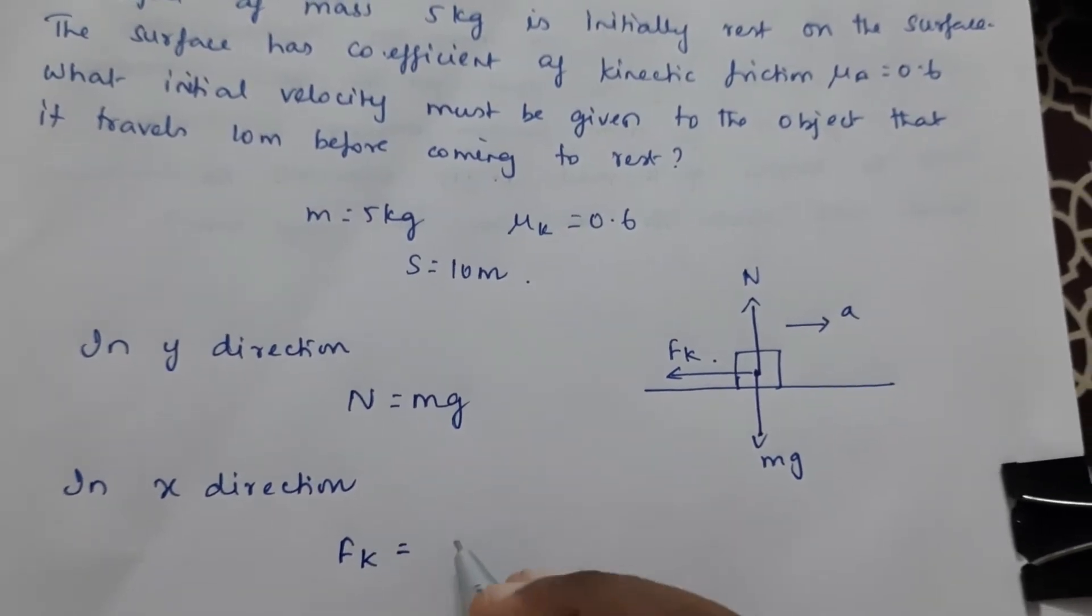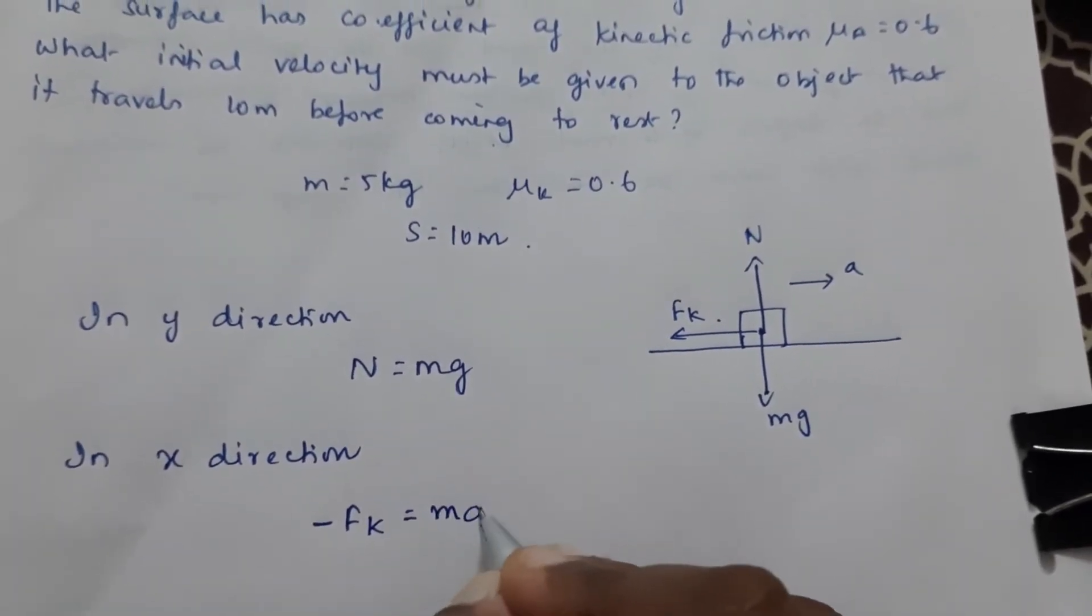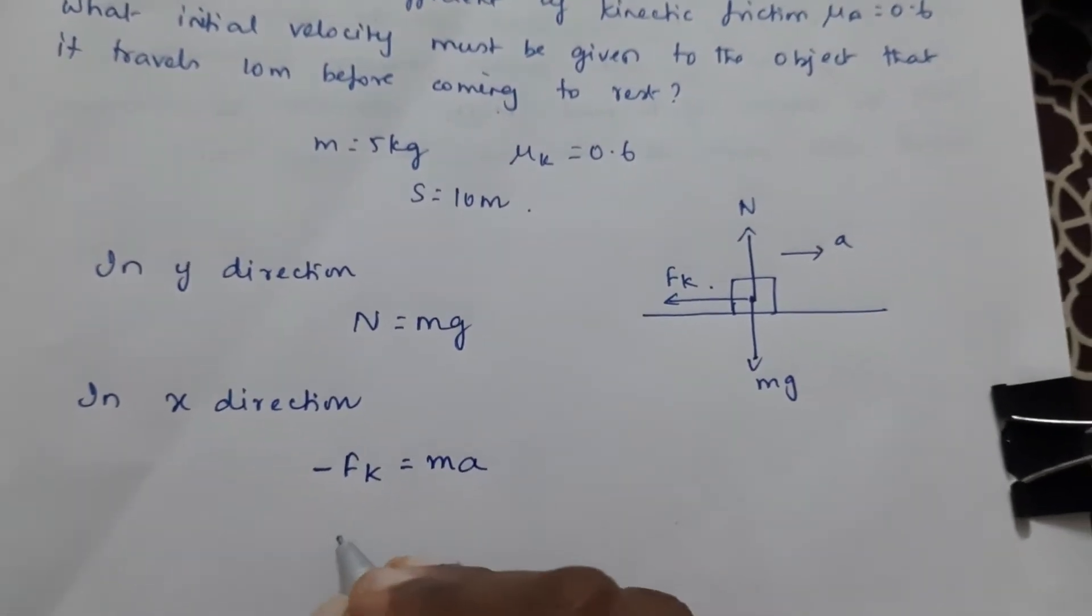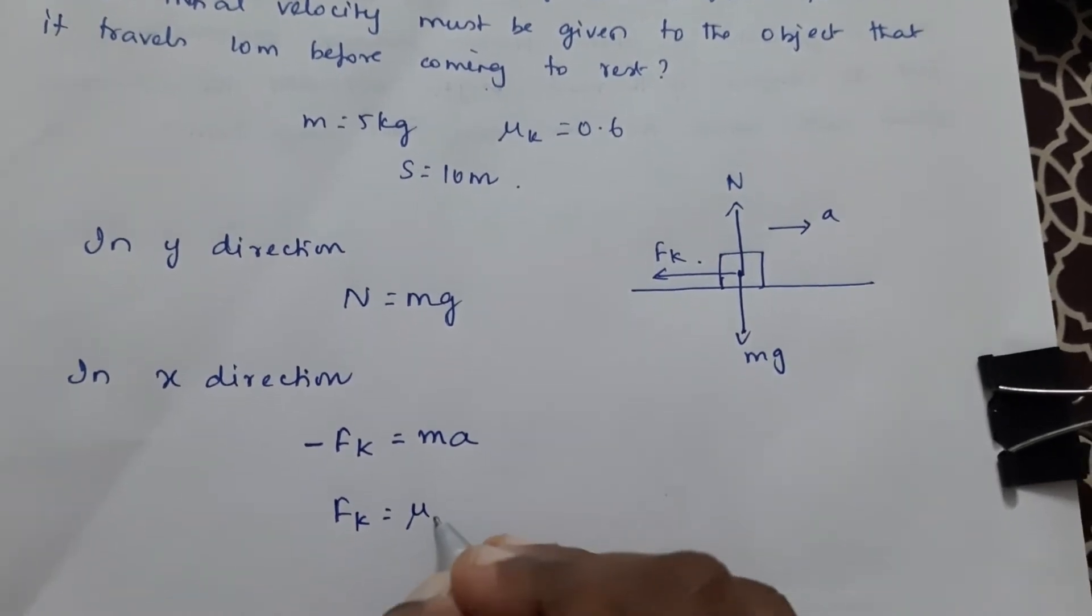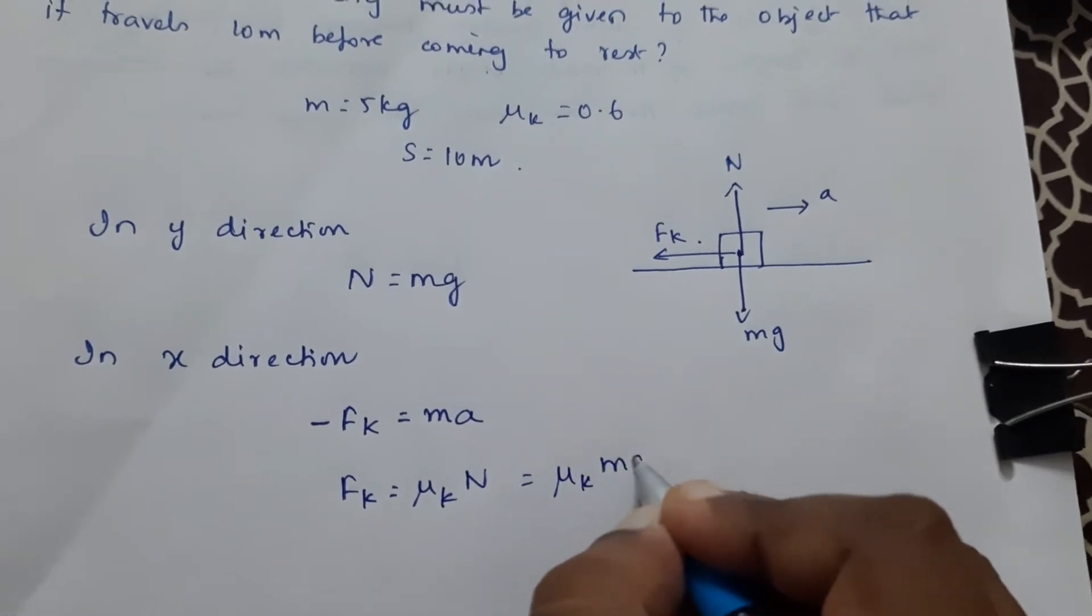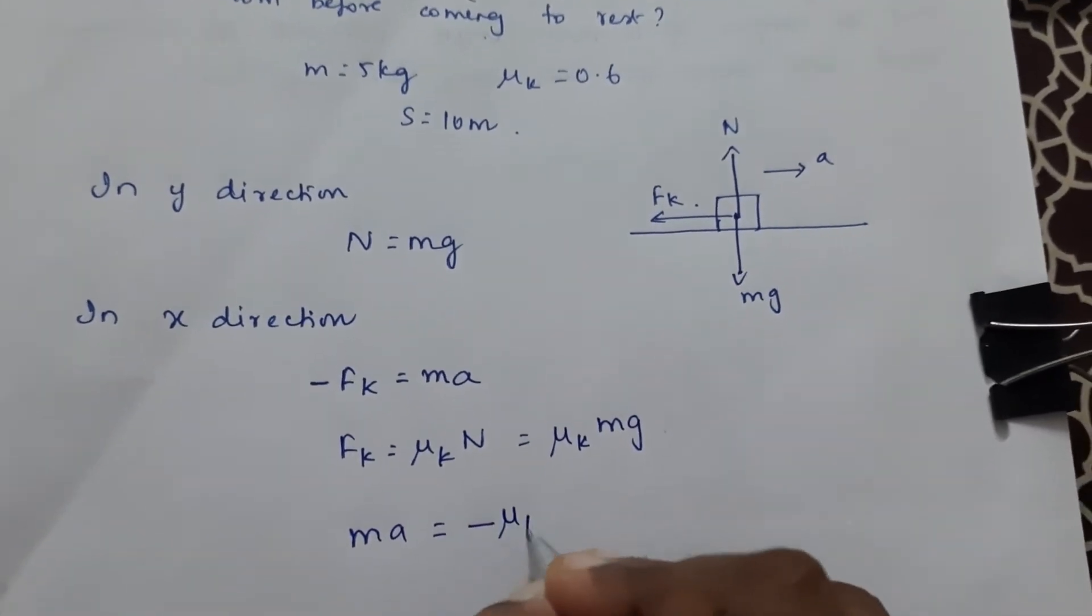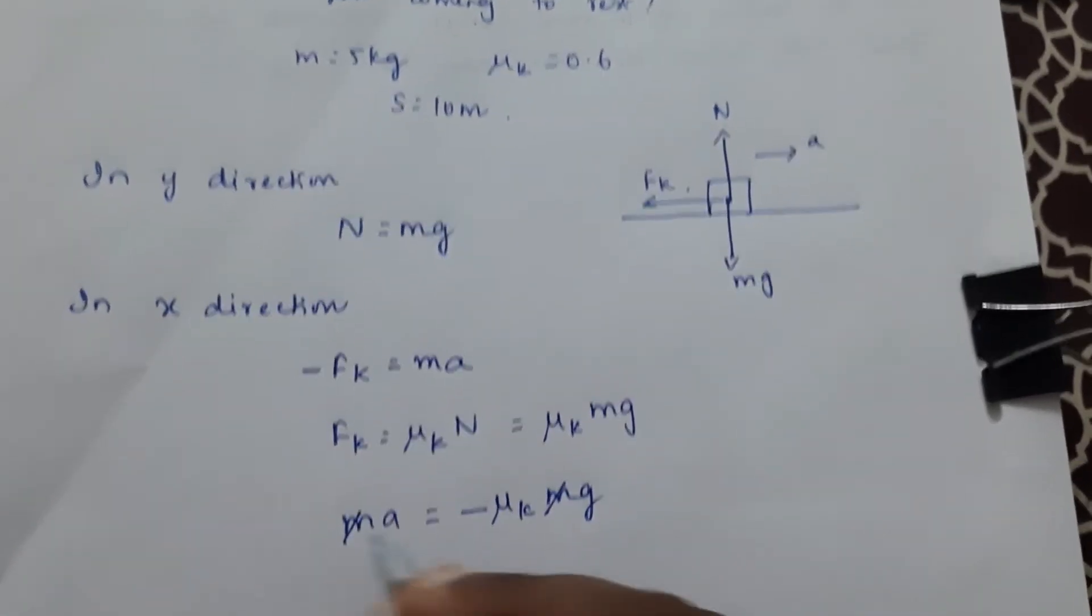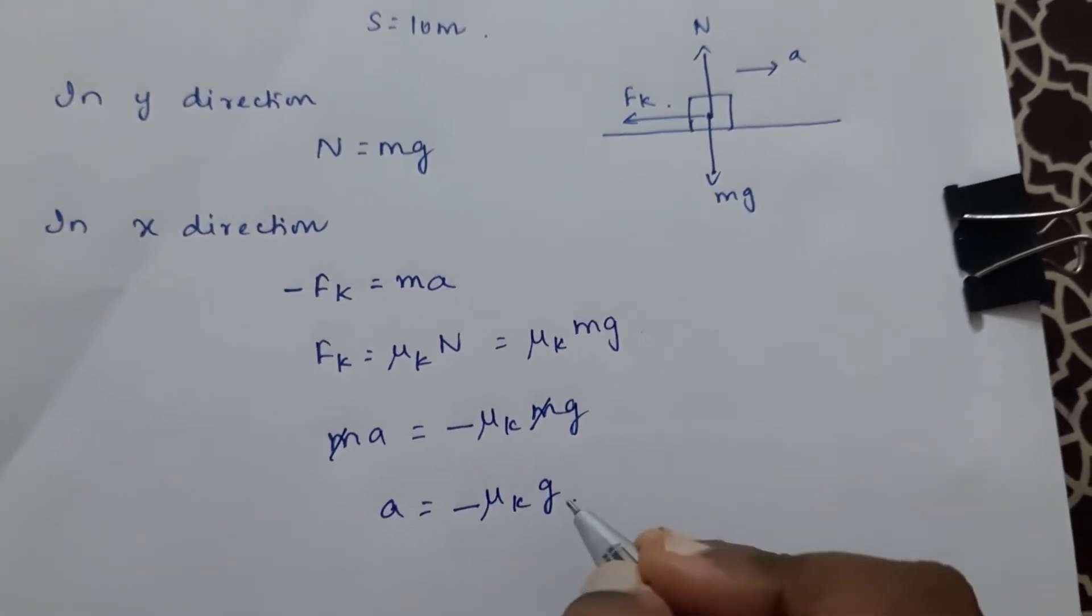So we can write according to Newton's second law, Fk is equal to, that is minus Fk is equal to m times a. So you know Fk is what? μk times N, which can be written as μk times mg. So I can write ma is equal to minus μk times mg. So m and m will get cancelled. So you will be getting acceleration is equal to minus μk g.